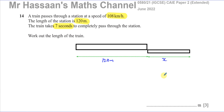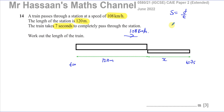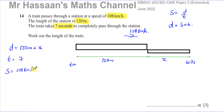I'm going to call the train length x. We know the time it took to travel that total distance is seven seconds, and we know the speed is 108 kilometers per hour at constant speed. We know that speed equals distance over time, so distance equals speed times time. The total distance traveled is 120 meters plus x.